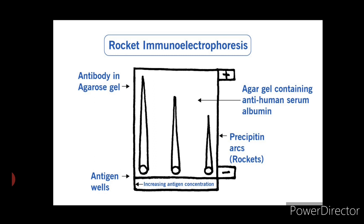Migration stops completely when the aggregates become large enough to be retained by the pores through which they cannot pass. As you can see in the diagram, the antigen — in this case human serum albumin — is electrophoresed into a gel containing antibody. The distance from the starting well to the front of the rocket-shaped arc is related to the antigen concentration.